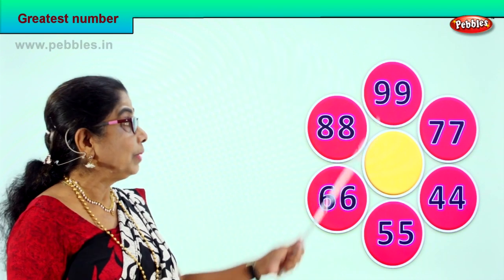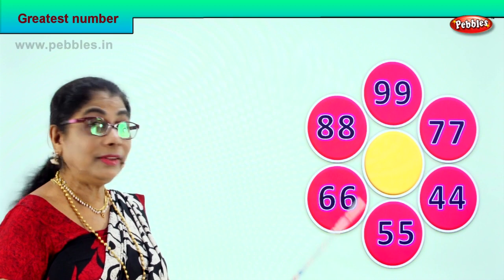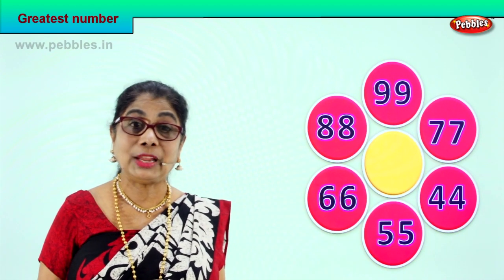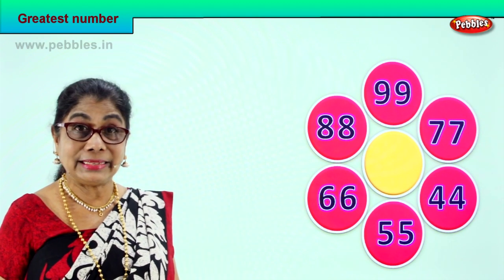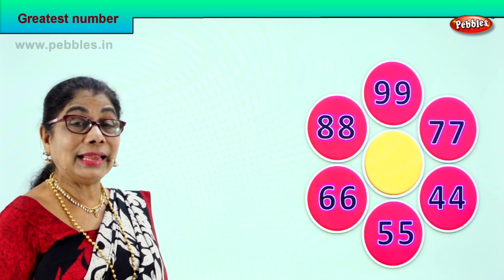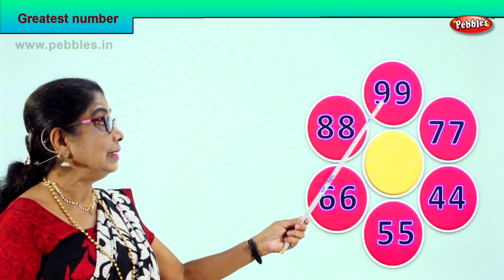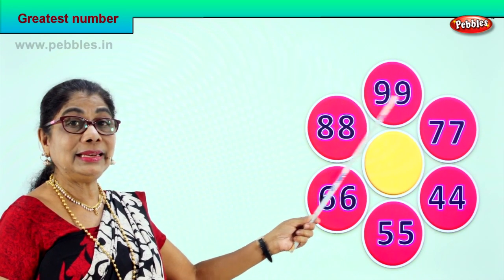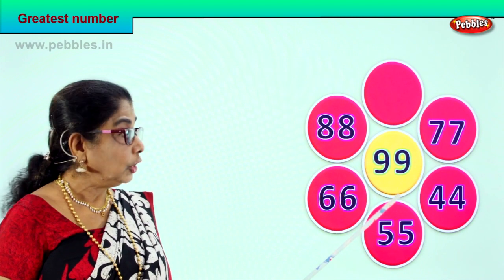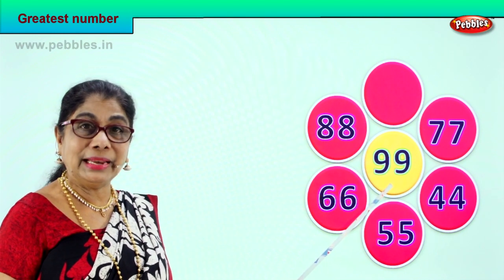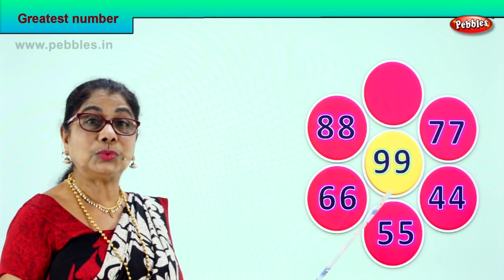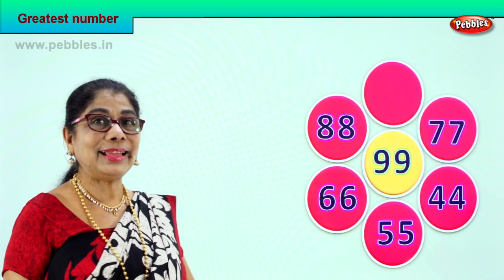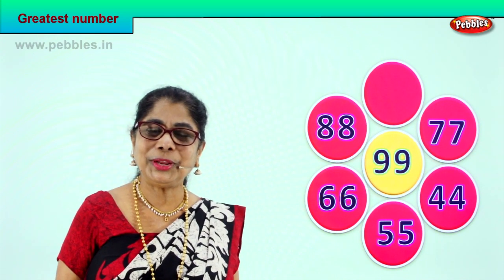Now we have 7 tens, 4 tens, 5 tens, 6 tens, 8 tens, 9 tens. Which number has the highest number of tens? 9 tens — this is the biggest number. So we pick it and put it in the middle. The biggest number from all these numbers — 9 tens, 9 ones — is 99.